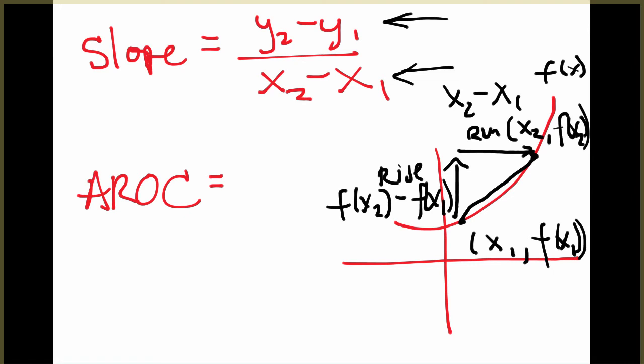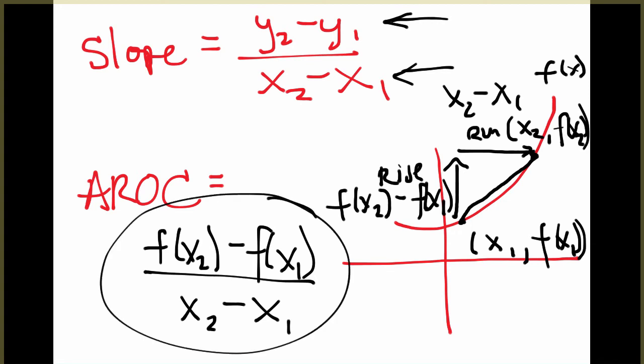So if we put that in a fraction, we get our formula for the average rate of change: f of x2 minus f of x1 all over x2 minus x1. So this is really the same formula as our slope, it's just written in function notation and can be used for non-linear equations.